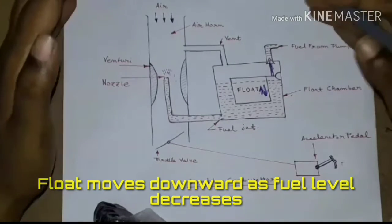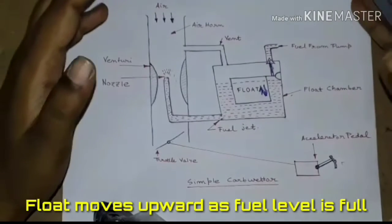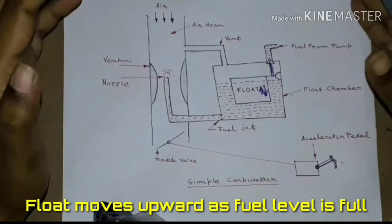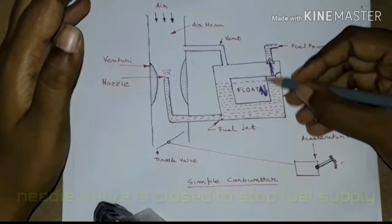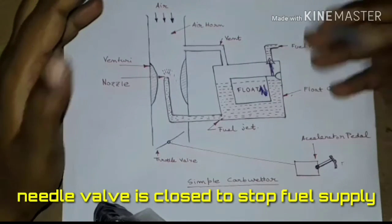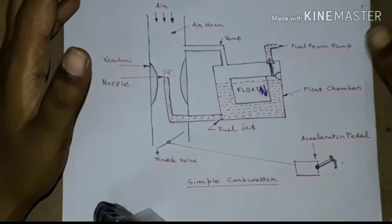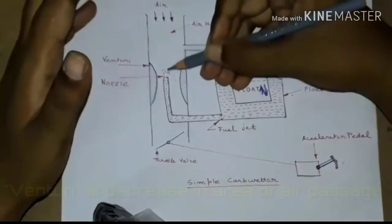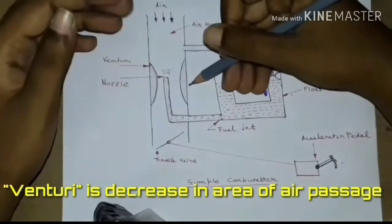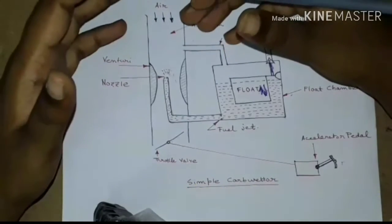As the fuel level in the float chamber decreases, the float goes down and opens the needle valve to enter more fuel. When the fuel chamber is full, the float goes up and closes the needle valve. That's how constant head of fuel is maintained. There is a minimization of airflow passage which is known as venturi here.